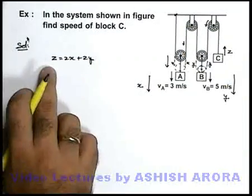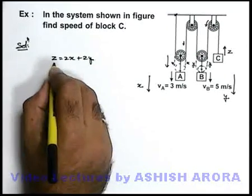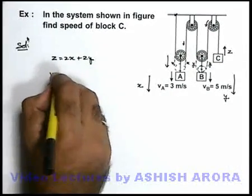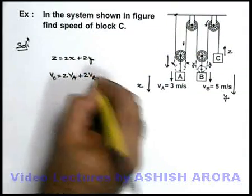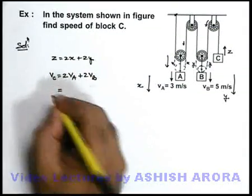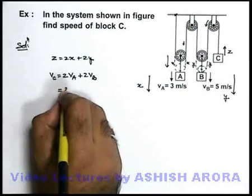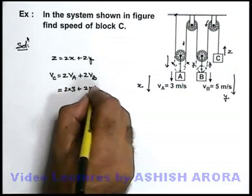In this situation, if we differentiate this expression, differentiation of z will give us velocity of block C. This will be twice the velocity of A plus twice the velocity of B. When we substitute the values, we can say it will be 2 into 3 plus 2 into 5.